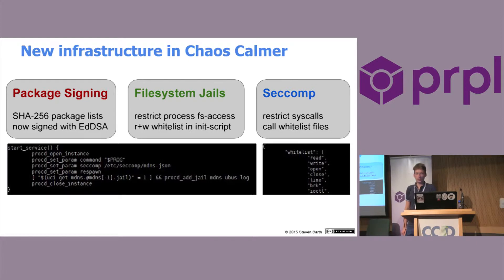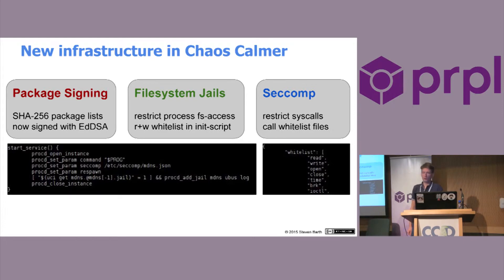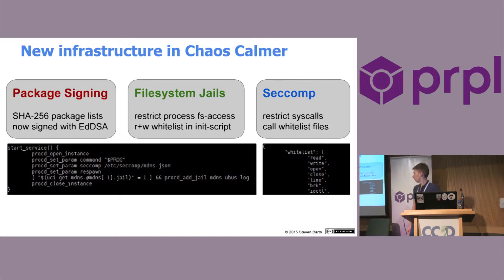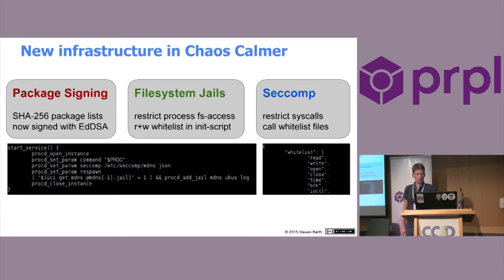We now have package signing, which is kind of a first for us. There was some initial work on package signing in earlier releases, but it relied on the GNU PG support in the OPKG package manager, which we didn't really use. Felix used the opportunity to use one of Bernstein's implementations of the Curve 25519 thing and build a package list signing tool based on the ED-DSA algorithm.